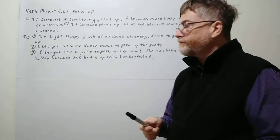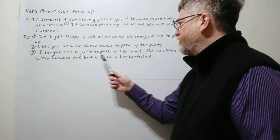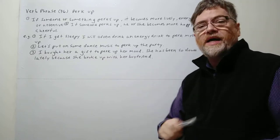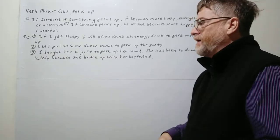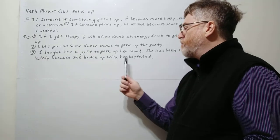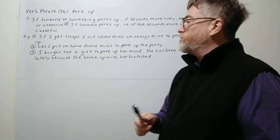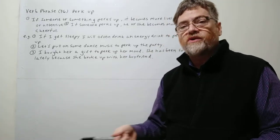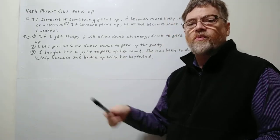Let's look at number three. I bought her a gift to perk up her mood. She has been so down - down means sad. If somebody is down, they're feeling sad, lately because she broke up with her boyfriend. So again, this perk up has to do with making somebody happier or more cheerful, especially when they're feeling down, when they're feeling sad.